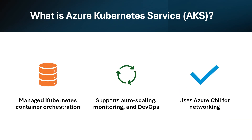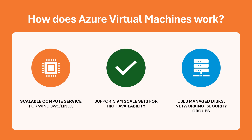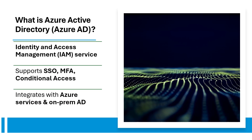What is Azure Kubernetes Service? It is a managed Kubernetes container orchestration service. It supports auto-scaling, monitoring, and DevOps, and uses Azure CNI for networking. How does Azure Virtual Machines work? It is a scalable compute service for Windows and Linux. It supports virtual machine scale sets for high availability, and uses managed disks, networking, and security groups.